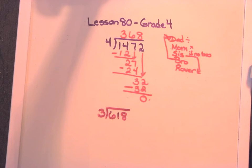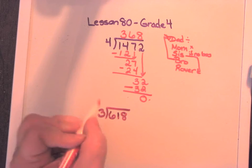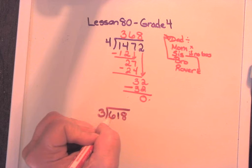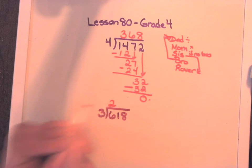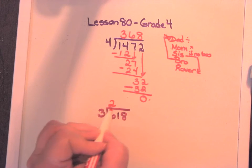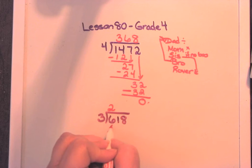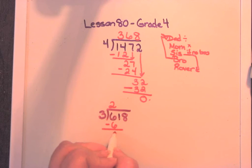618 divided by three. So still using the same process as up here. How many threes can we get out of 6? We can get 2. So dad goes on the roof. Mom multiply. Roof times the door ends up on the floor. Sister subtract. There's our floor. 6 minus 6 is 0.